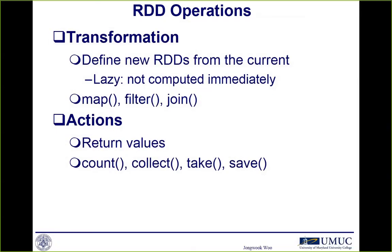Transformation is used to define a new RDD and it has laziness — meaning before the action function is called, the value of RDD is not computed yet. Famous transformation functions are map, filter, and join. Action functions return values and compute the value of RDD — those are count, collect, take, and saveAsTextFile. You have already used these in tutorials one and two.